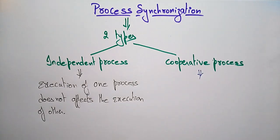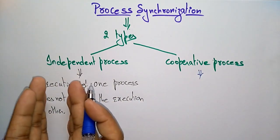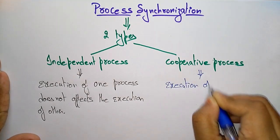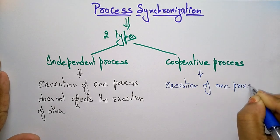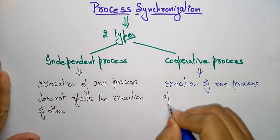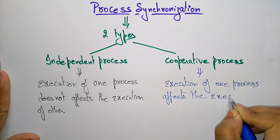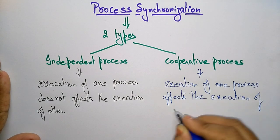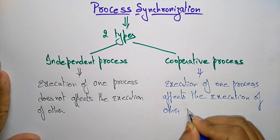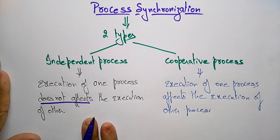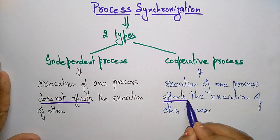Cooperative process means the execution of one process affects the execution of others. Here it is affecting, whereas in independent it is not affecting. The main difference: in independent, execution does not affect others; in cooperative, execution of one process affects the execution of other processes.